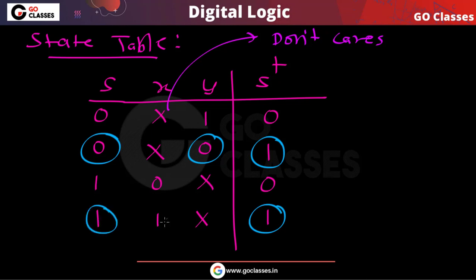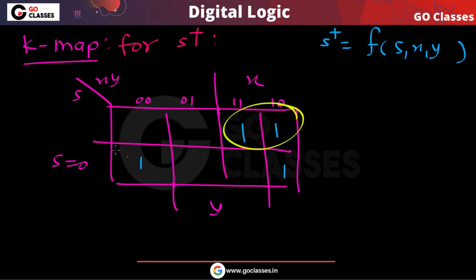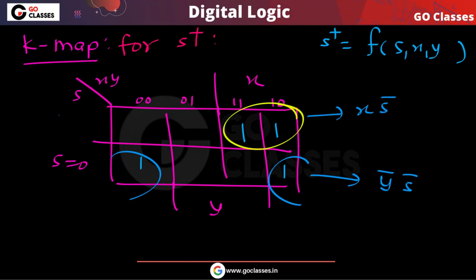From the K-map you can write the expression. When S is 1 and X is 1, that gives XS. When S is 0 and Y is 0, that gives Y-bar·S-bar. So the final answer is S-plus equals XS plus Y-bar·S-bar.